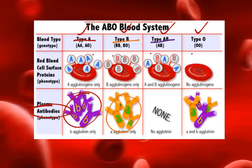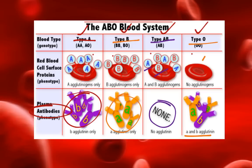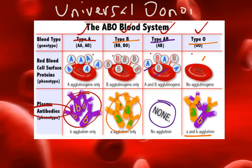If you have type AB blood, you have antigens for both type A and type B, and therefore you do not build up A or B antibodies. So you can be given type A blood and it will be okay, and you can be given type B blood and it will be okay. If you have type O blood, you have no antigens on your red blood cells, and therefore you have both A and B antibodies, so if you are given type A or type B blood, your body will reject it. We call type O the universal donor because if you are type O you can give to anyone, but unfortunately you cannot accept from anybody but type O.